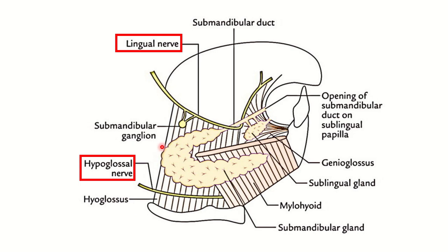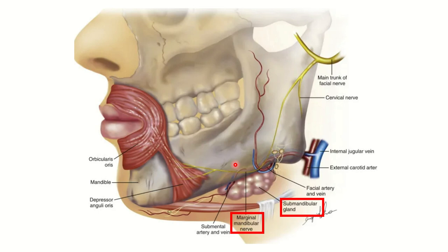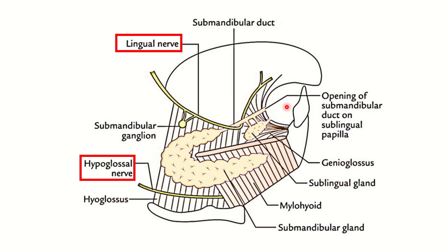Here we can see the submandibular gland. The hypoglossal nerve runs below the submandibular gland. There is also the lingual nerve, which is very close to the submandibular gland and may get damaged. The marginal mandibular nerve may also be damaged. So three important nerves are present around the submandibular gland that may be damaged during this procedure.